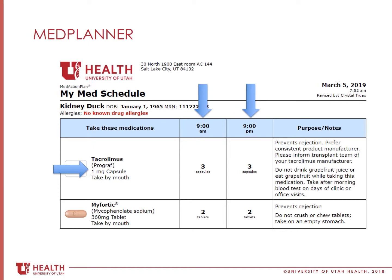The med planner also has the name of the medication in bold on the left-hand side. Medications may have more than one name, and sometimes the brand name will be listed on top with the generic name below, or sometimes the generic name may be on top with the brand name below. On this med planner, the generic name, tacrolimus, is on the top, and the brand name, Prograf, is below.